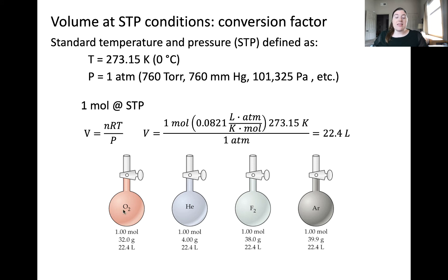You can see that looking at this illustration. There's one mole of each of these gases, oxygen, helium, fluorine, and argon, in their various containers. If they're under STP conditions, all gases will occupy a volume of 22.4 liters.